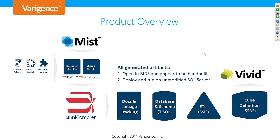On the left-hand side you'll see offline schema metadata model and metadata instance — those are the new features in MIST 4.0 that the next session is all about. Your code is then passed down to the Biml compiler, which can generate documentation and a tracking database schema. We'll probably stop today at the database schema, and at the end I'll show you what it would look like to generate packages using natural metadata, and with MIST you can go all the way to cubes. Vibit is another product we offer — it's an Excel add-in — but we'll cover that in a future series.